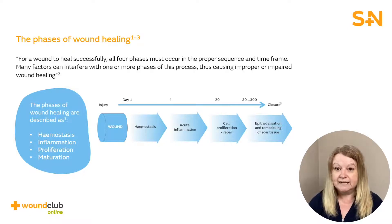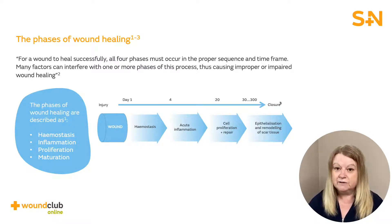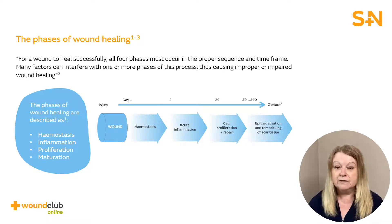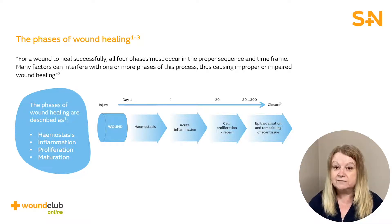This process can continue for weeks, months, or even years. The phases of wound healing are haemostasis, acute inflammation, cell proliferation and repair, and epithelialization and remodeling of scar tissue. For a wound to heal successfully, all four phases must occur in the proper sequence and time frame.